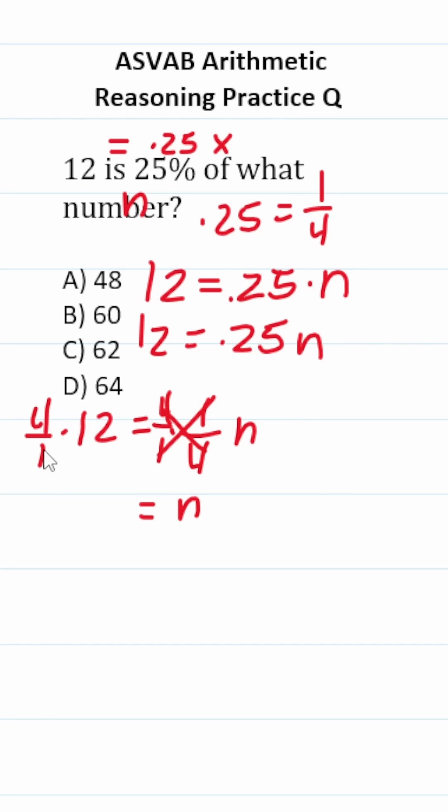Four over one is just four. So this is 12 times four, which is 48. So the correct answer to this one is A, 48.